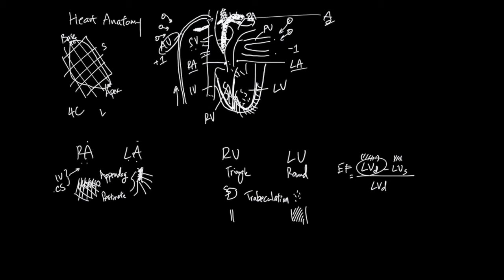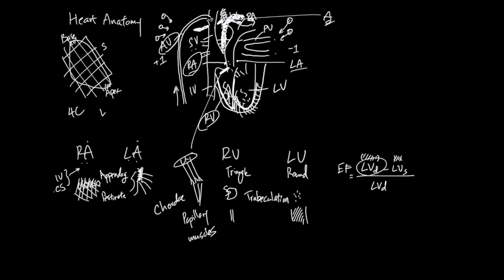Now let's talk about the valves. The valve between the right atrium and right ventricle is the tricuspid valve. It has three cusps, and each cusp is connected to a tendon called the chordae, which attaches to muscles called papillary muscles. The papillary muscles of the tricuspid valve attach to the intraventricular septum — the structure that connects the two ventricles — and also to some other structures. Overall, the attachment of the tricuspid valve in the right ventricle is a bit complex.